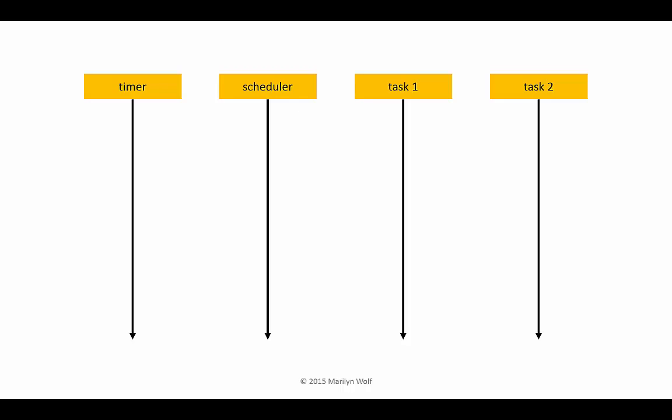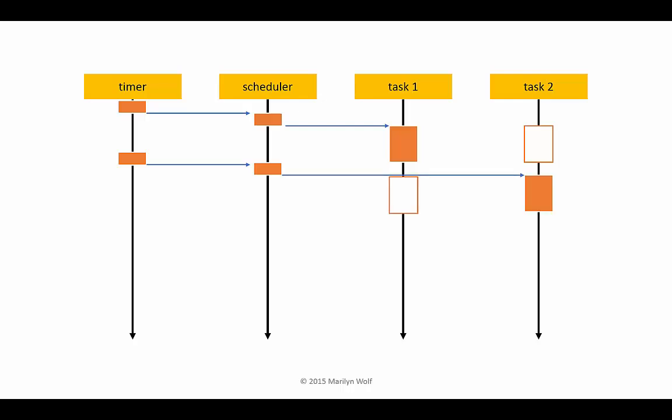We can use our UML sequence diagram to illustrate the different states of the processes. The timer interrupts, runs the scheduler, which chooses which process to run next — in this case, task one. We illustrate the fact that task two is ready but not running by using the white box. On the next interrupt, the scheduler chooses task two, which gets the colored box to show that it's running. The white box in task one shows that it's ready but not executing, and so on for the rest of the execution.